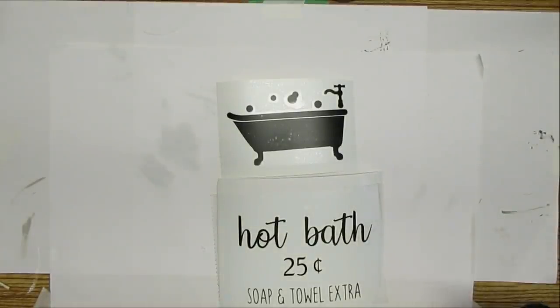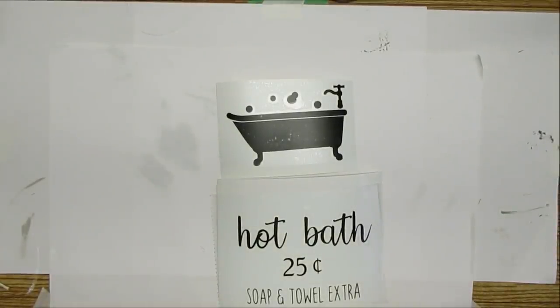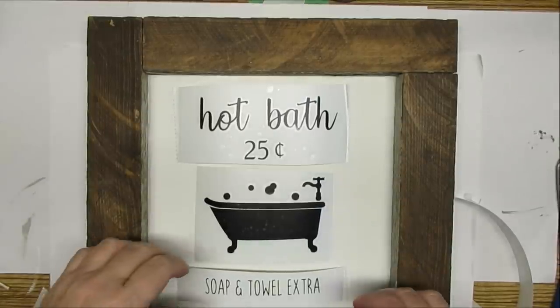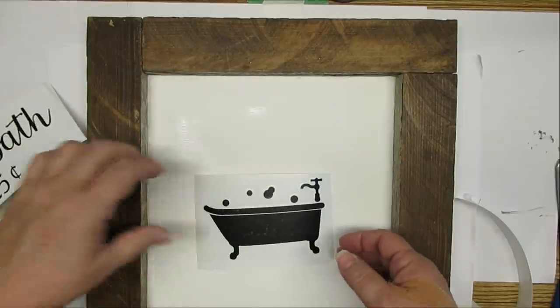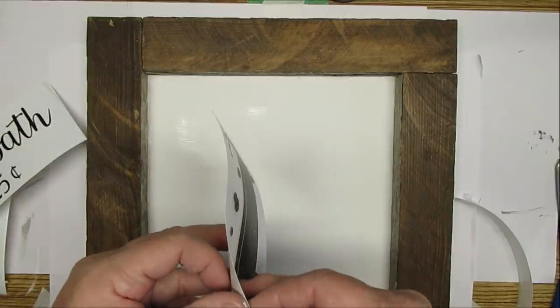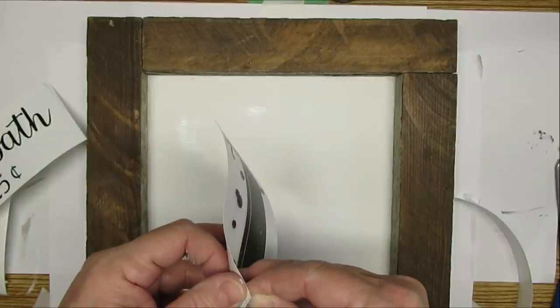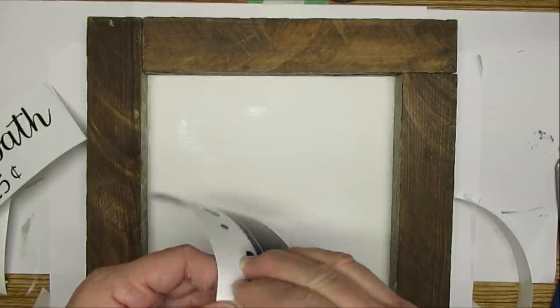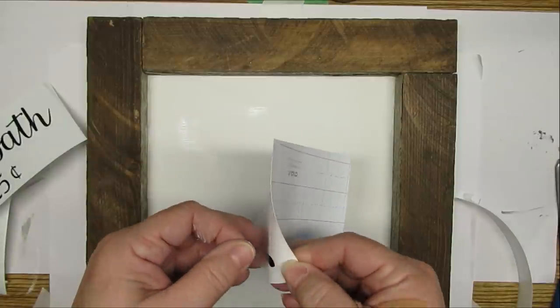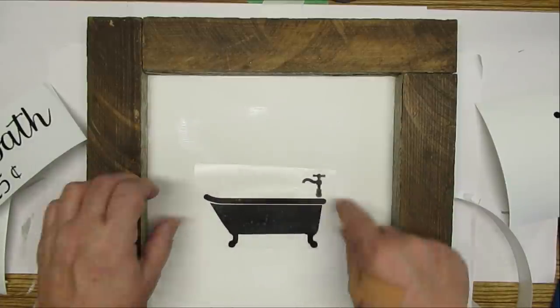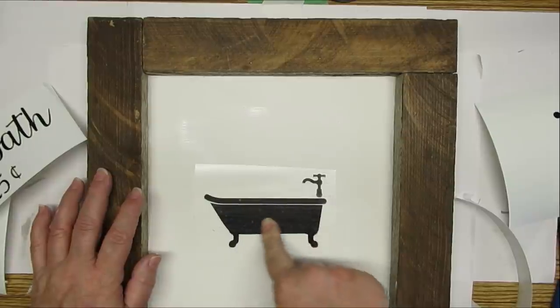Now for this one I'm going to cheat a little bit. I'm using my Cricut Joy and I created this decal of the little tub and hot bath 25 cents soap and towel extra. I will have this as a free printable available on my website so if you're interested go click on the link down in my description box and you'll be able to download it for free. As you just saw the layout I'm going to put the tub in center so I'll start with that to make sure that it is centered.